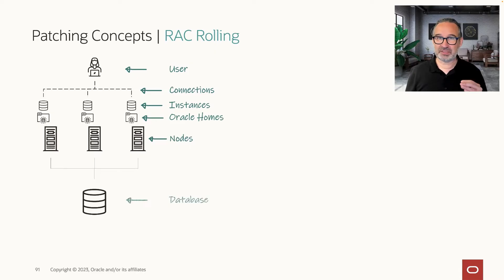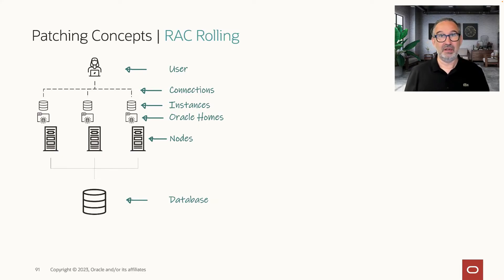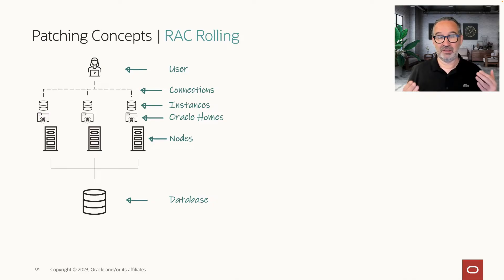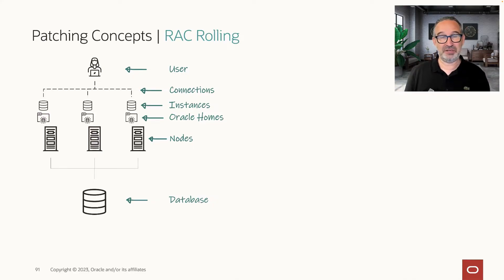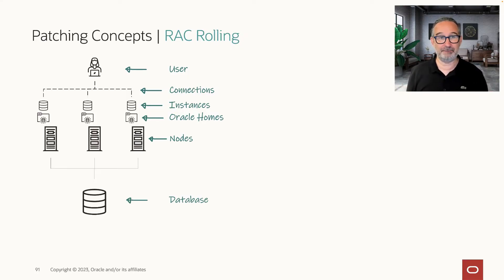So how does this look like? We have the application that uses, and they're connected to the instances on each of the nodes in our cluster. In each of the cluster nodes, we have an Oracle Home. And on the bottom of the slide, we have the database. This database should be kept up and running all the time.